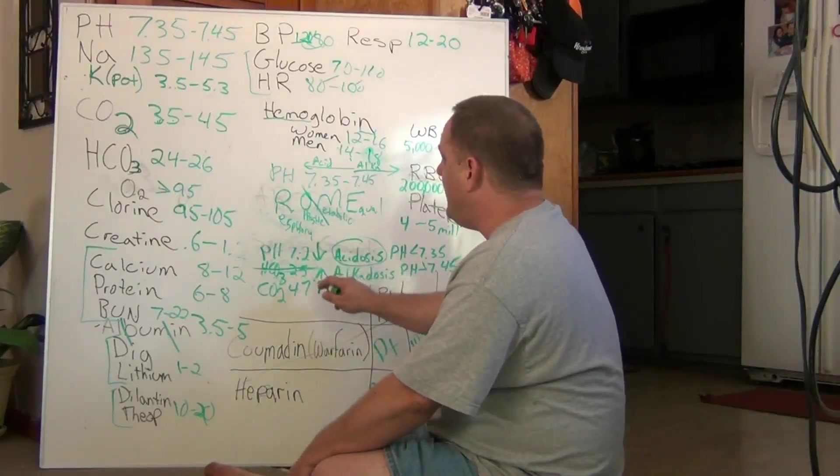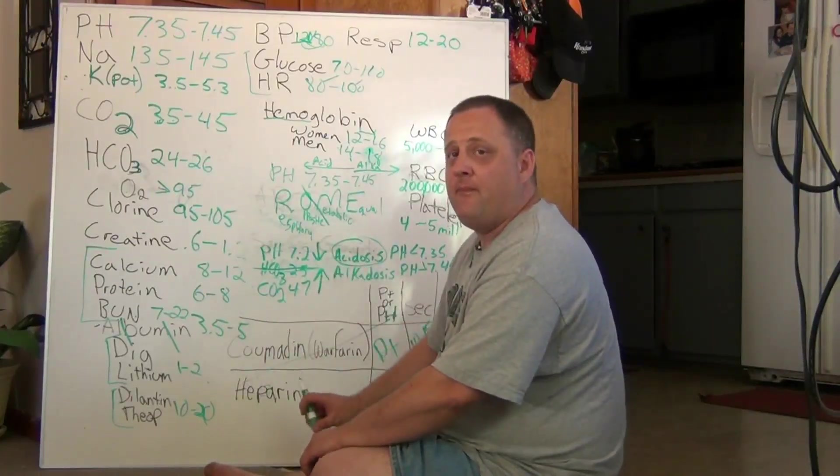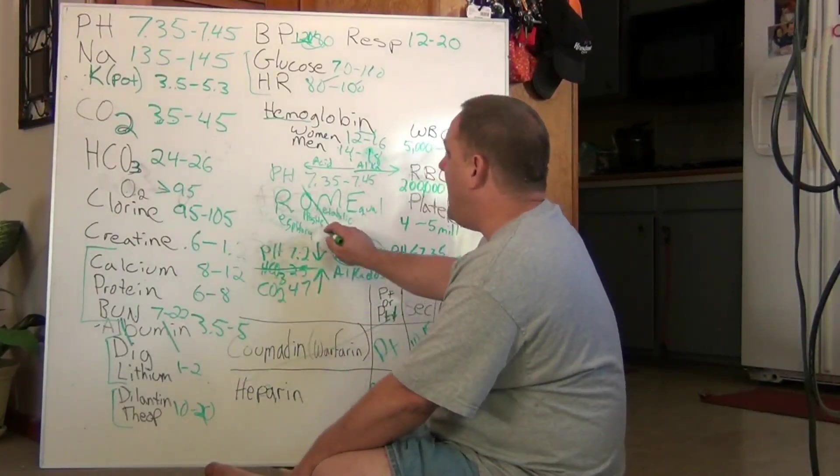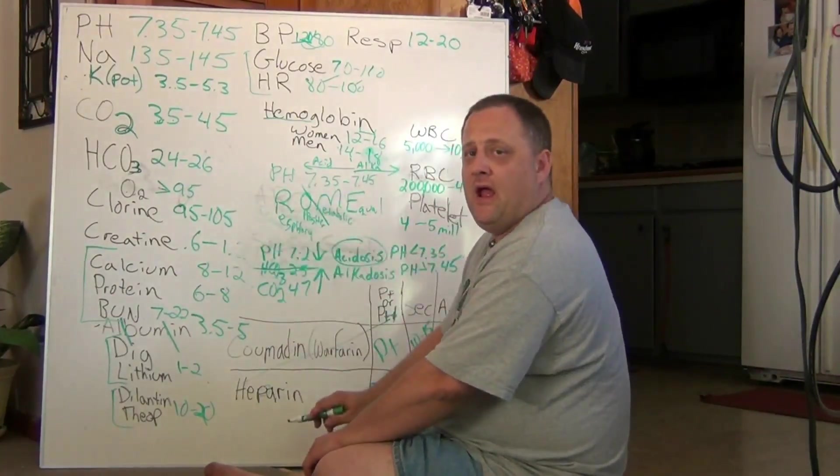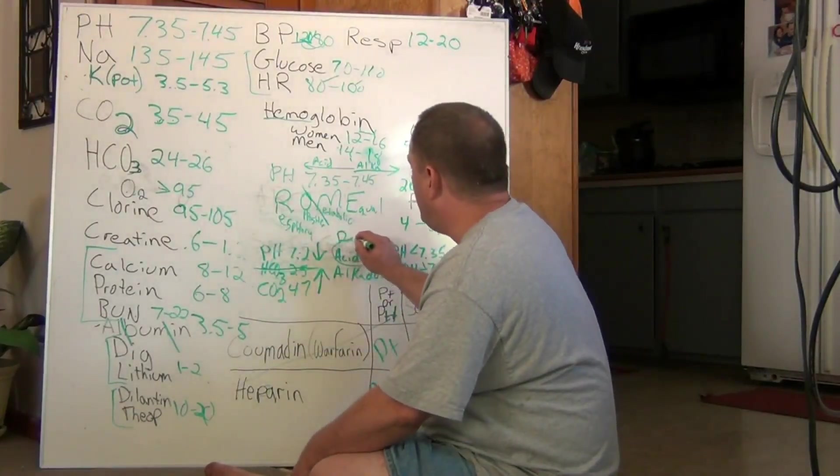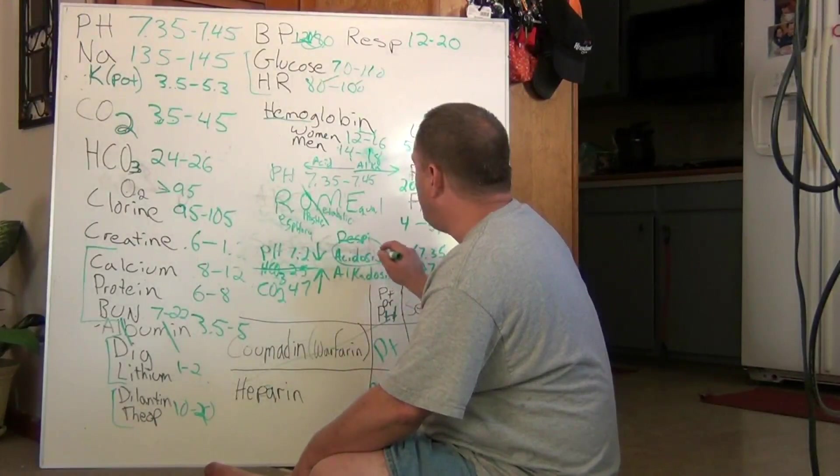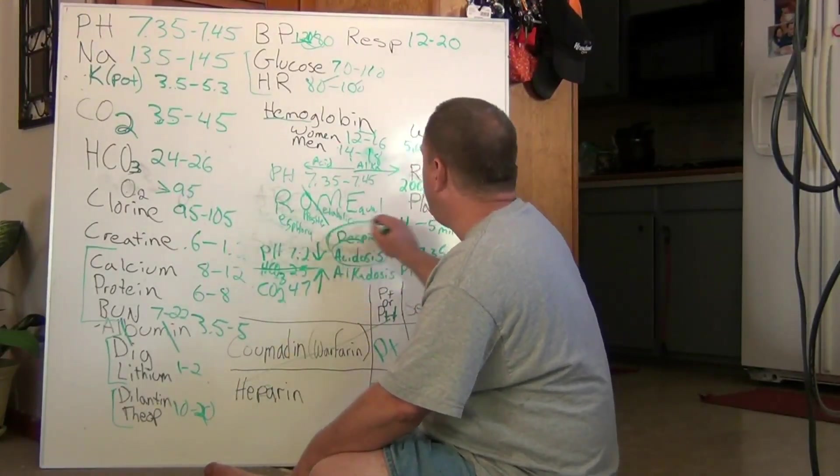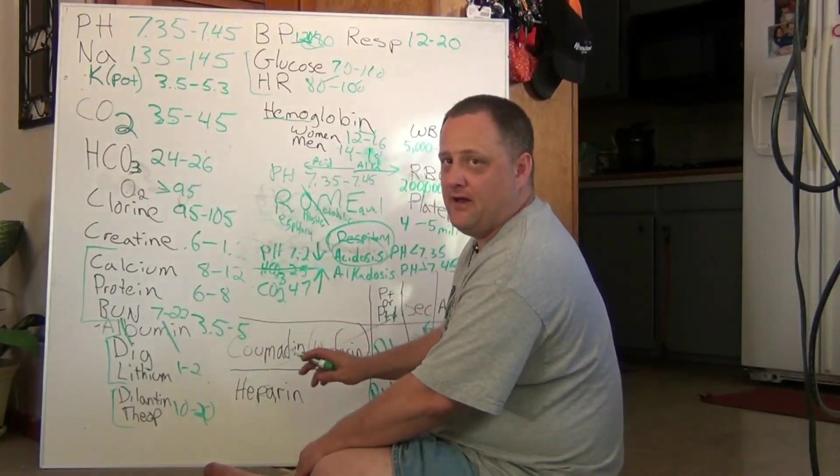Now, if one's going down and one's going up, they're going in opposite directions. So, if they're opposite, this is going to be a type of respiratory. So, the answer is going to be some type of respiratory acidosis. I'm sorry. It's going to be respiratory acidosis.